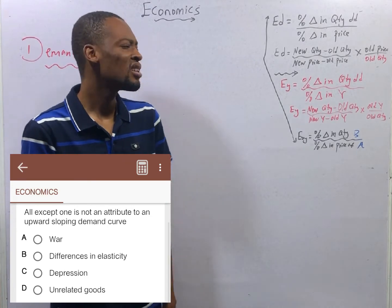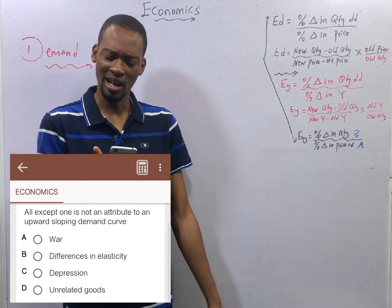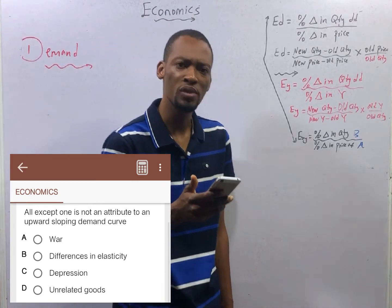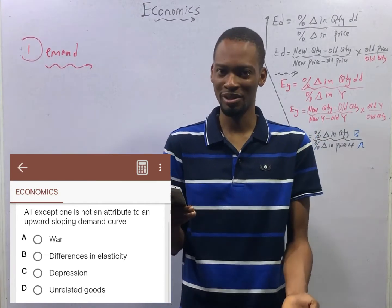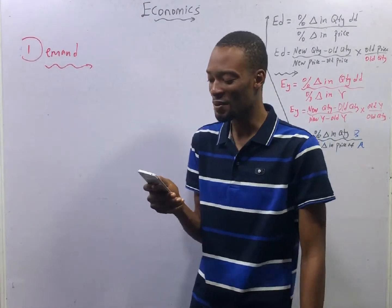Except unrelated goods. Ladies and gentlemen, even if you don't know A, B, and C are correct, what does unrelated goods have to do with upward sloping demand curve? I don't know, and you don't know. So, we go with option D.